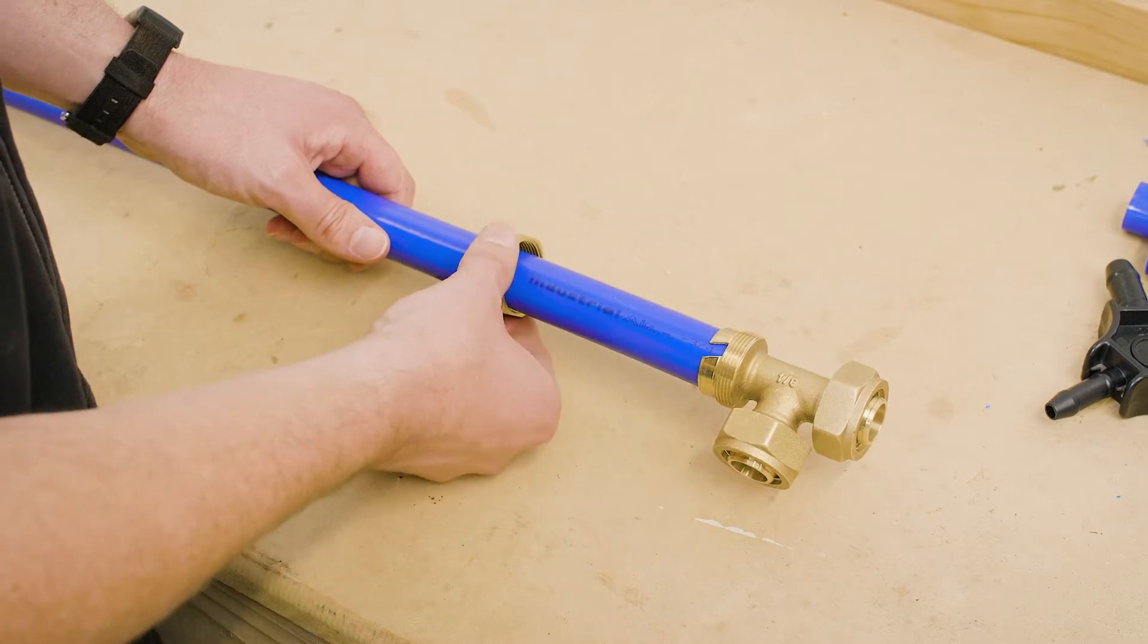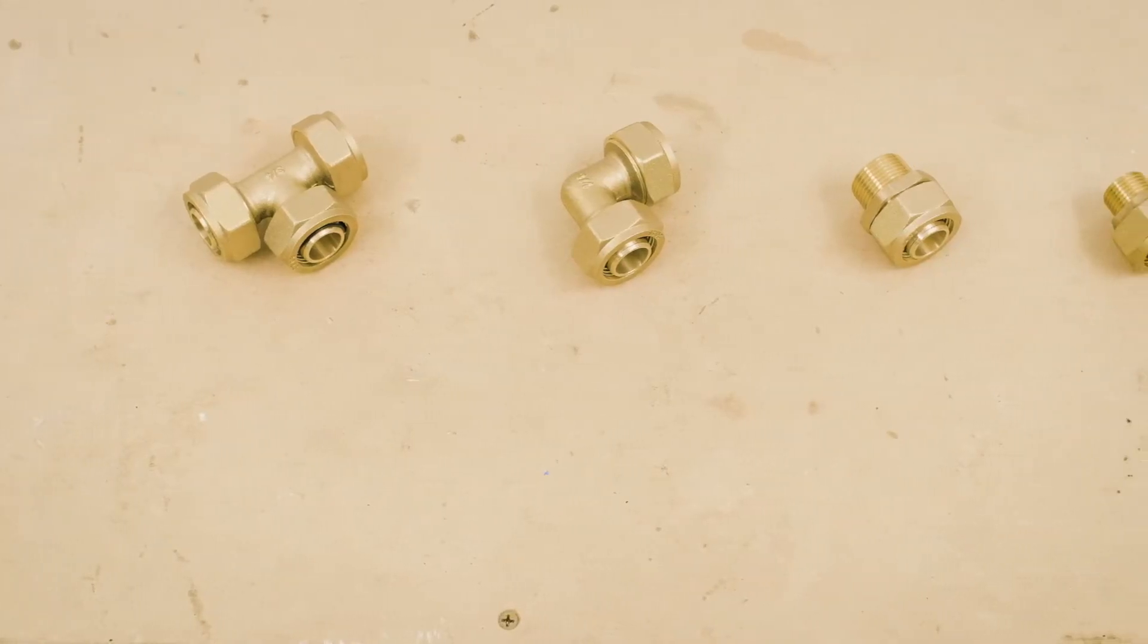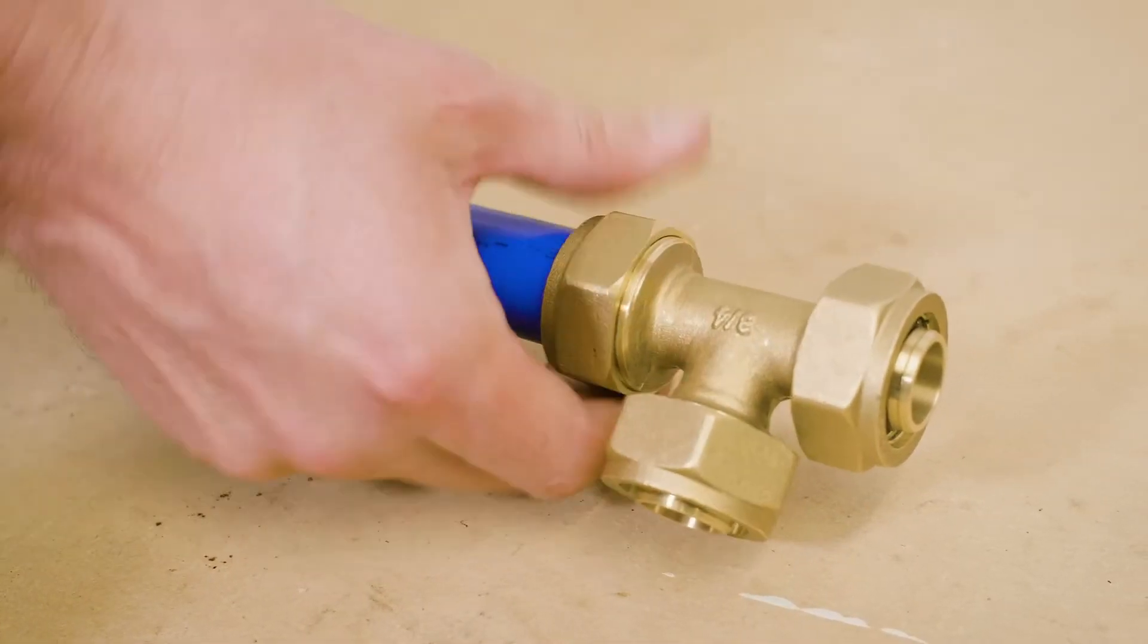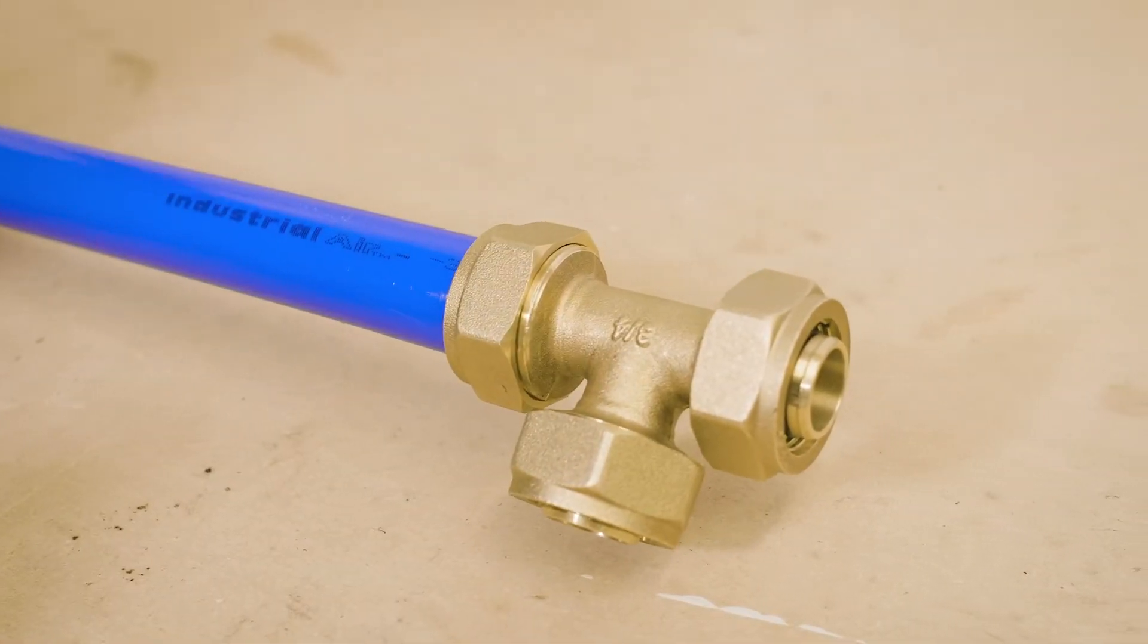Secure the nut to the desired fitting. Depending on your chosen setup, this could be a tee fitting, elbow fitting, or straight fitting. Hand tighten the nut and draw a reference mark on the fitting and nut.